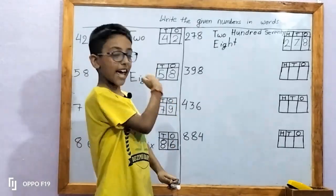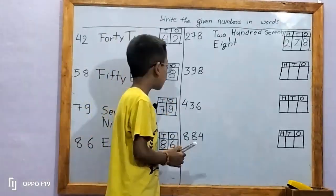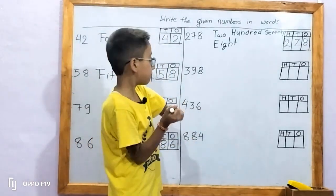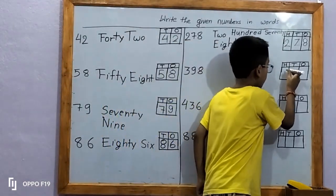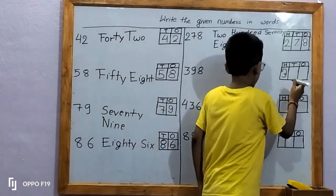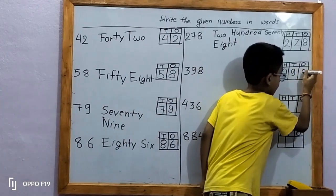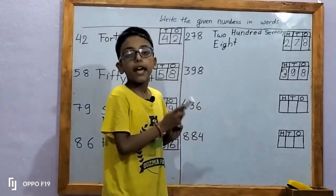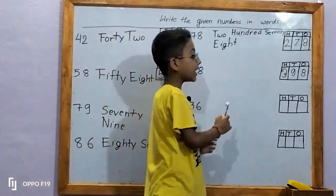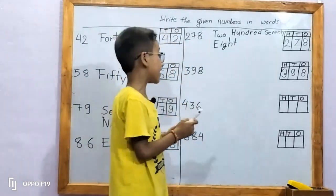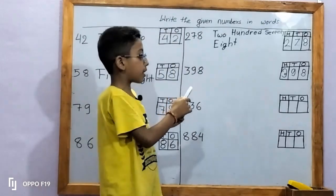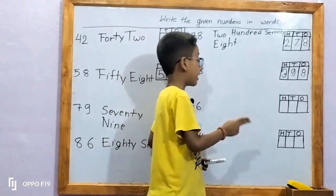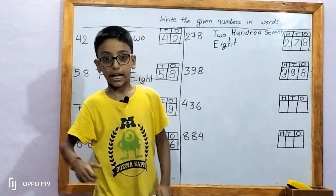Let's move on to the next number. In the next number there is given 398. Let's write in place: 3, 9, 8. Eight is in one's place; eight ones means 8. Nine is in ten's place; nine tens means 90. Three is in hundred's place; three hundreds means 300. It makes the number 398. Let's write in words.